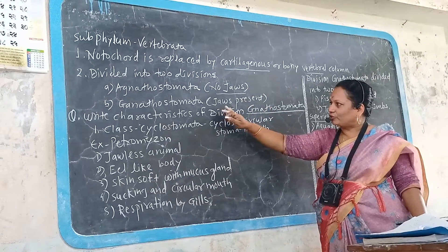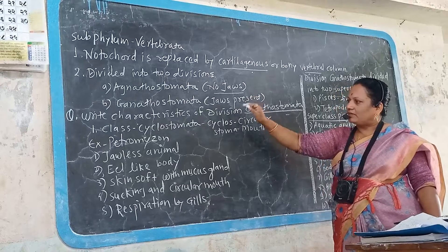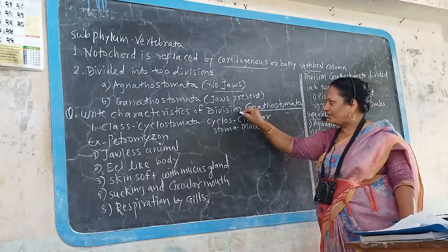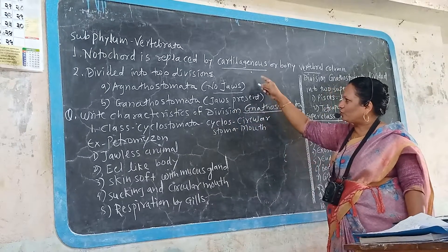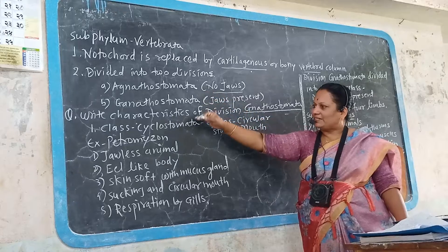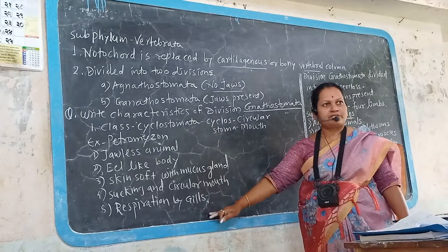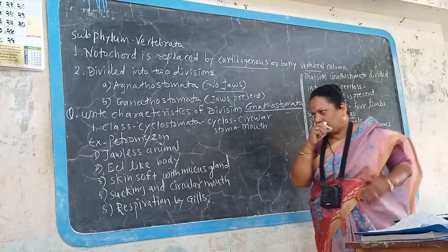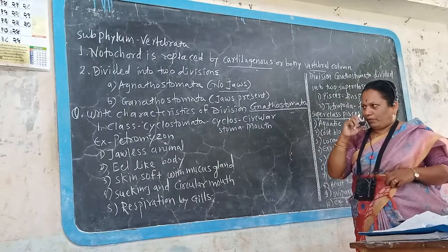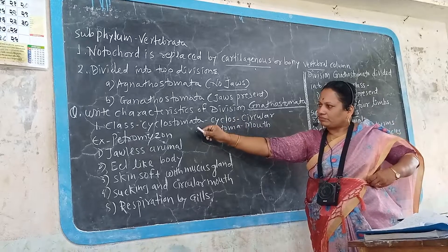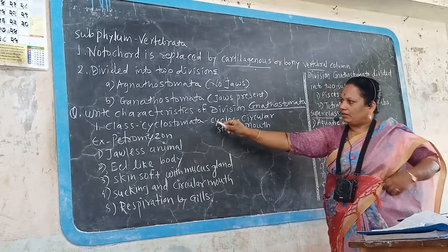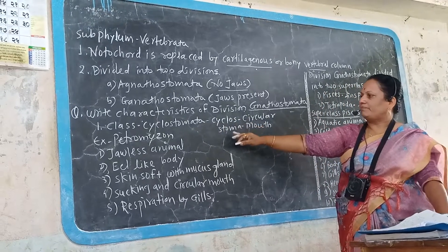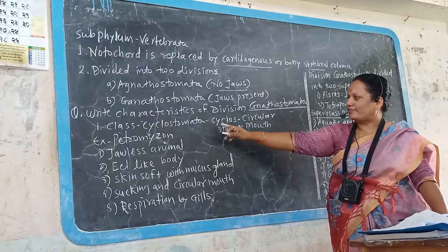In Gnathostomata, jaws are present. The characteristics of division Gnathostomata: it consists of the first class Cyclostomata. Cyclos means circular, stoma means mouth.